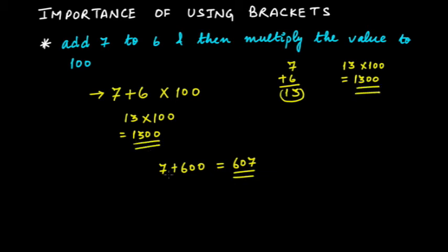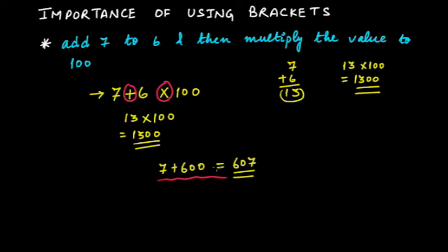That confusion came because you wrote it in the form of an expression but didn't put brackets, so the second person couldn't understand which operation was to be performed first. Here you have two operations: multiplication and addition. By the statement, you have to add 7 to 6 and then multiply by 100. But since you did not put any bracket to indicate which operation is performed first, anyone could do it the wrong way.